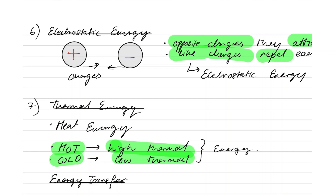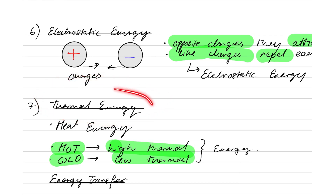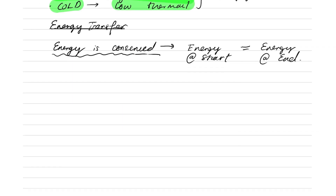For example, let's say I have five units of electrostatic energy and it converts into thermal energy. Then at the end, I know there has to be exactly five units of thermal energy. We haven't looked at the unit for energy yet, so I'm not going to say it right away. But when we learn more about calculations, we're going to go more into units. So energy is conserved — that means energy at the start equals energy at the end.